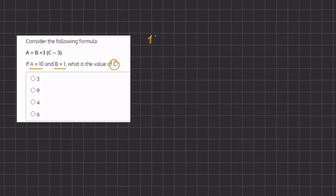So instead of a I'm going to be writing 10 equals b which is 1 plus 3. We'll open our parentheses and our unknown variable c minus 3.